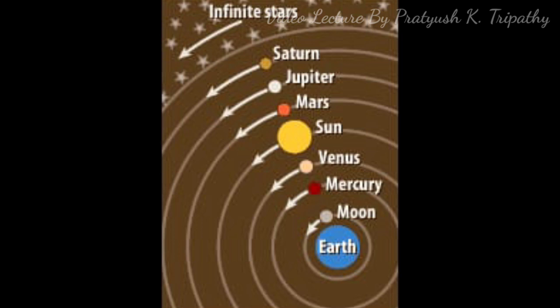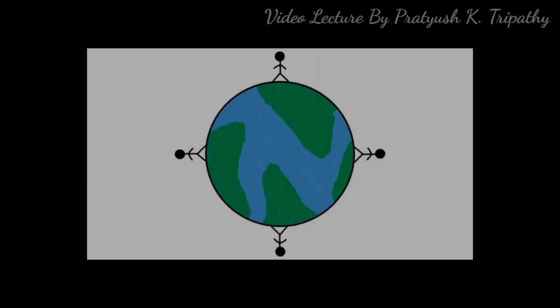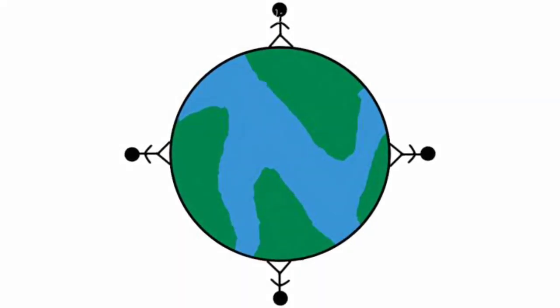The apparent movement of the sun, moon, stars and other celestial bodies gives us an impression that all these bodies are moving while we are stationary. Actually we little realize that it is the Earth that is constantly on the move. We do not feel the rotation because we are also moving along with the Earth at the same speed.